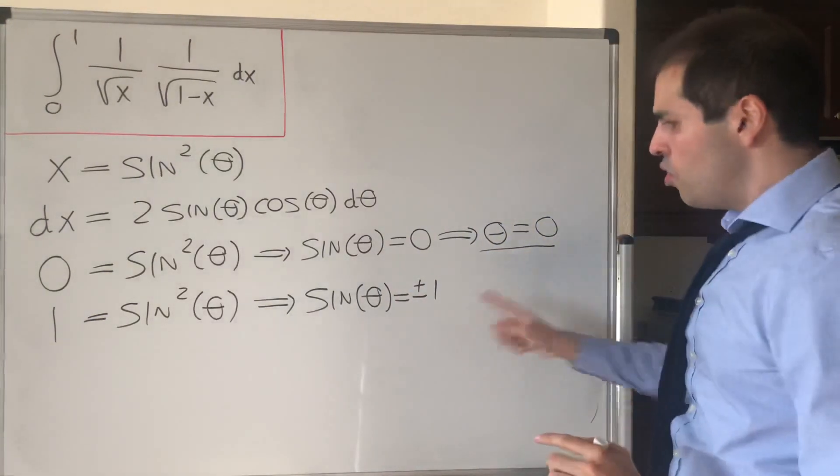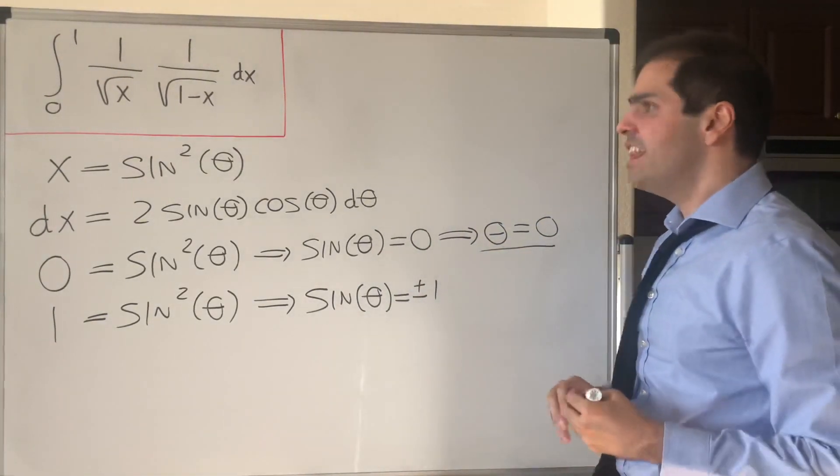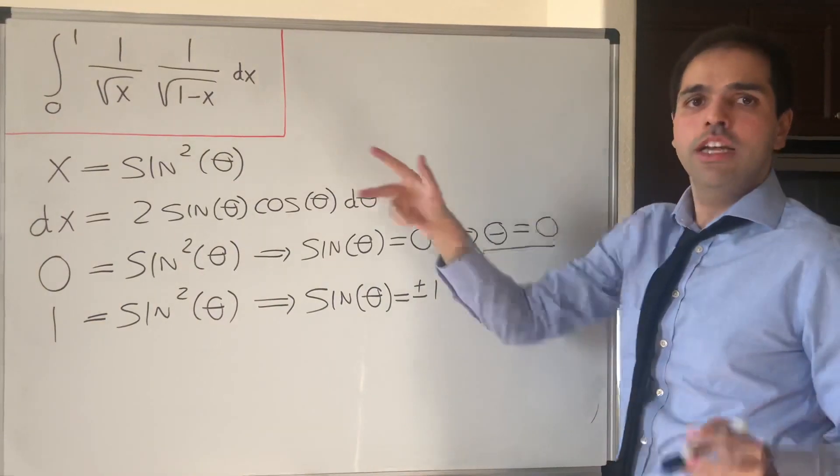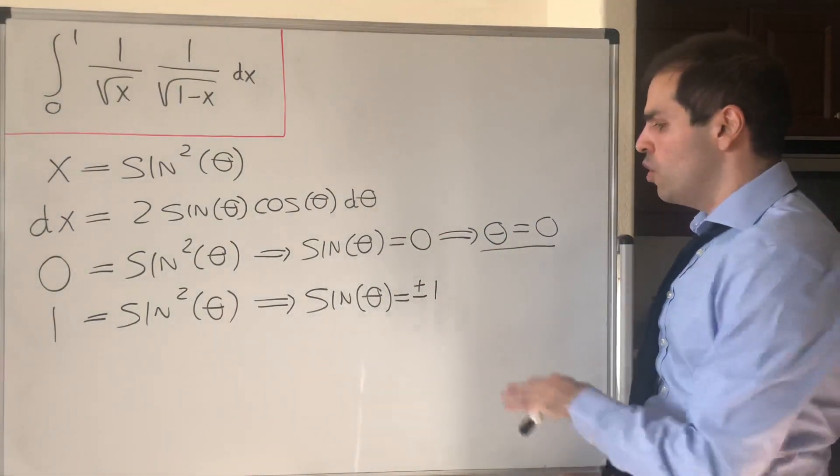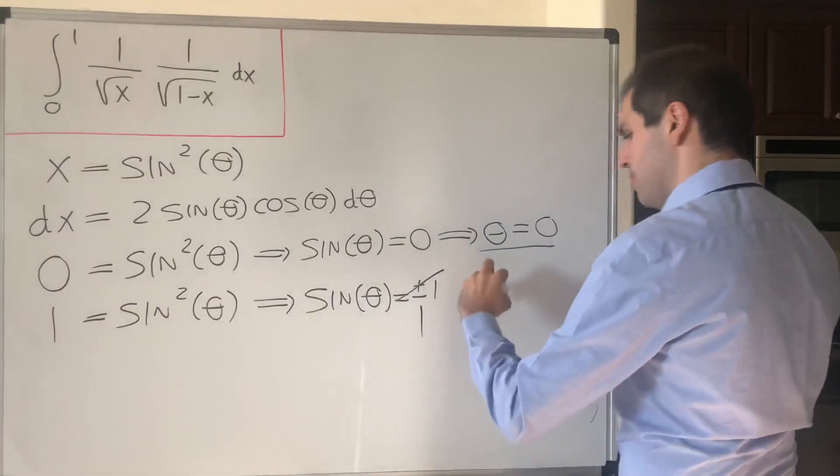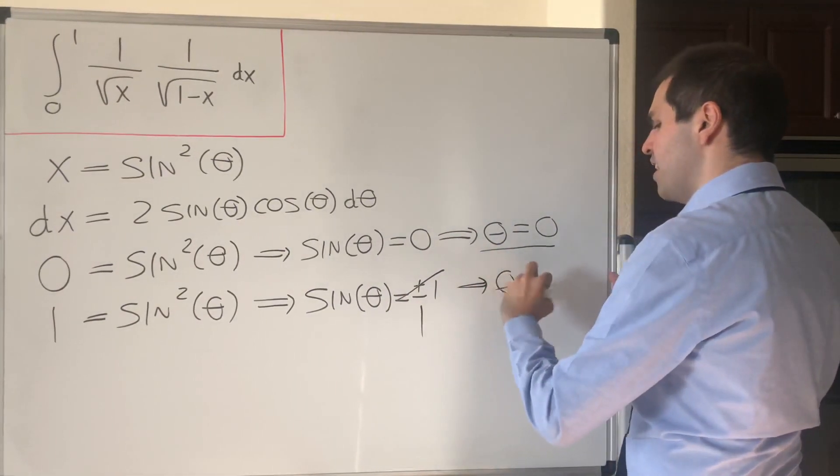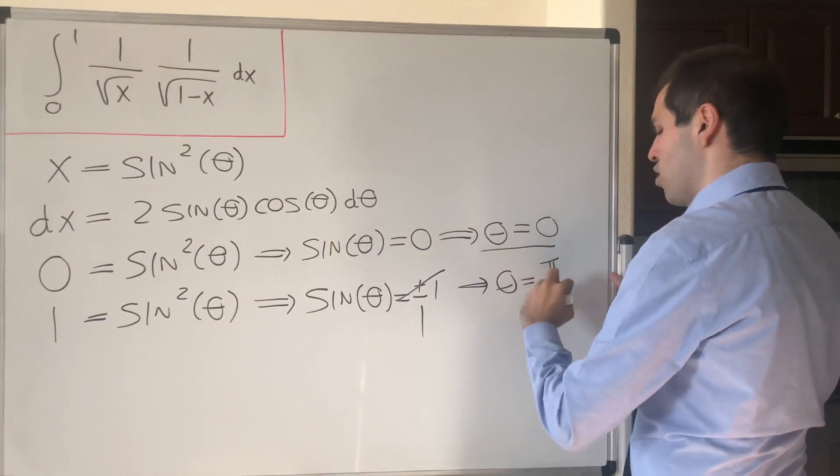And don't quote me on that, but I think in the end for this answer, it doesn't matter if we do plus 1 or minus 1, so let's just do plus 1 to make things easy, and that gives you theta equals pi over 2.